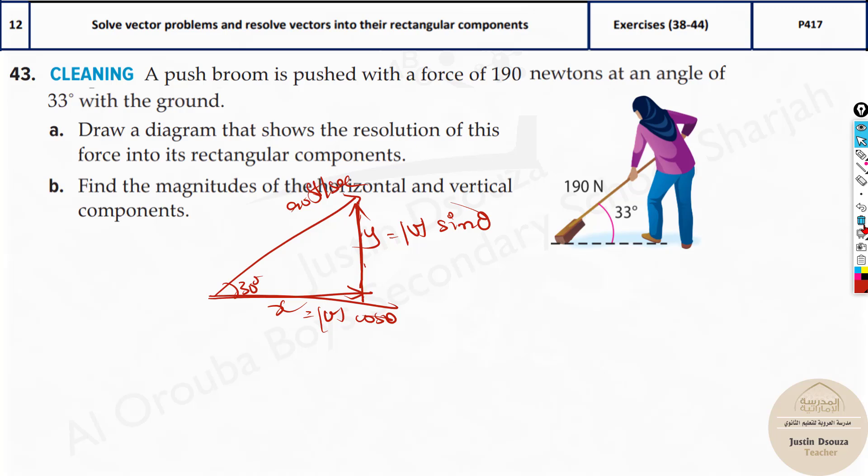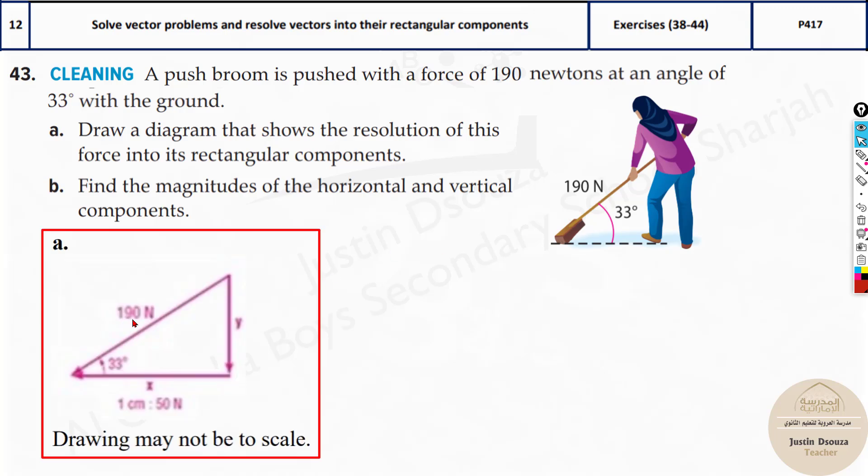And another similar problem here. They have already given the figure. So it is very simple. You have to just draw a vector, what we just now did. Draw this diagram and then find the values. That would be for x, it is 190 cosine 33 degrees. And for y, it is 190 sine 33 degrees.